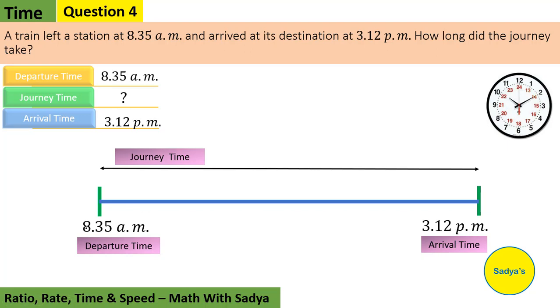Now, 8:35 a.m., which is the departure time, what is the nearest next hour? It is 9 a.m.